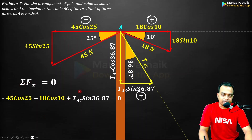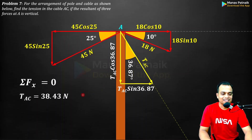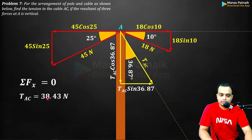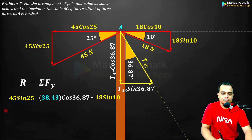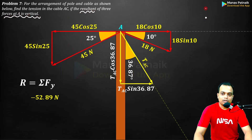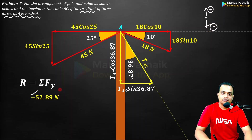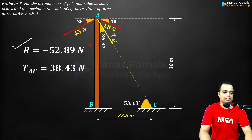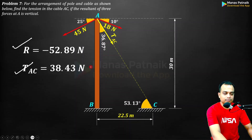Solving ΣFx = 0, TAC works out to 38.43 newtons. Substituting this into the resultant equation, R = −52.89 newtons. The negative sign means the resultant is vertical but directed downward, which makes sense since all force components are in the third and fourth quadrants. Final answers: tension in cable AC = 38.43 N, resultant = −52.89 N (downward).